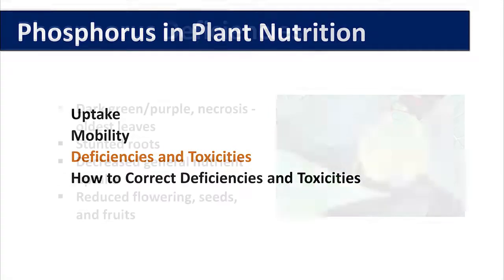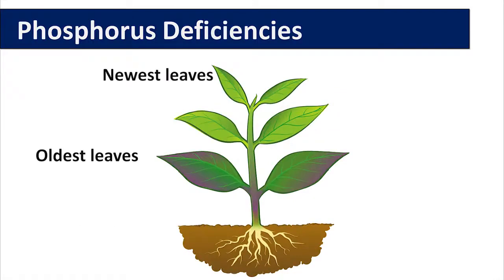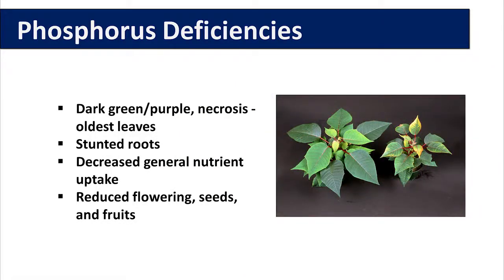Deficiencies and toxicities — what do phosphorus deficiencies and toxicities look like in the plant? If phosphorus is deficient, there will be dark green or purple coloration, or necrosis, in the oldest leaves first. Roots can be stunted, and because of stunted roots there can be a general decrease in nutrient uptake. Finally, if phosphorus deficiencies go unchecked, you can have reduced flowering, seed, and fruit production.